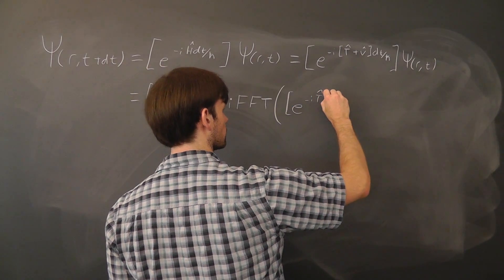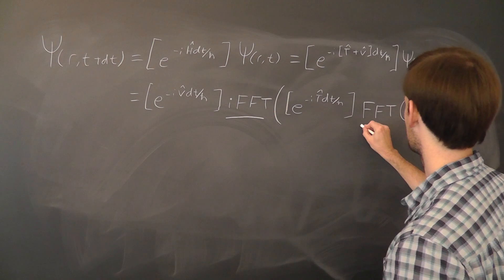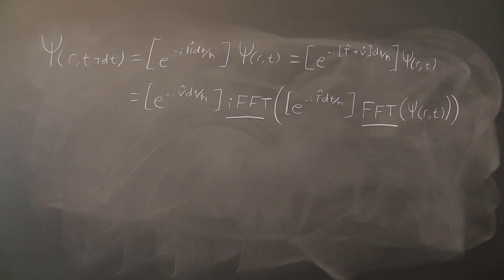Then, in order to multiply it by the position space operator, we have to do another Fourier transform to bring it back to position space. Also, it turns out that there's a bit of an error if we split up the system in that way.